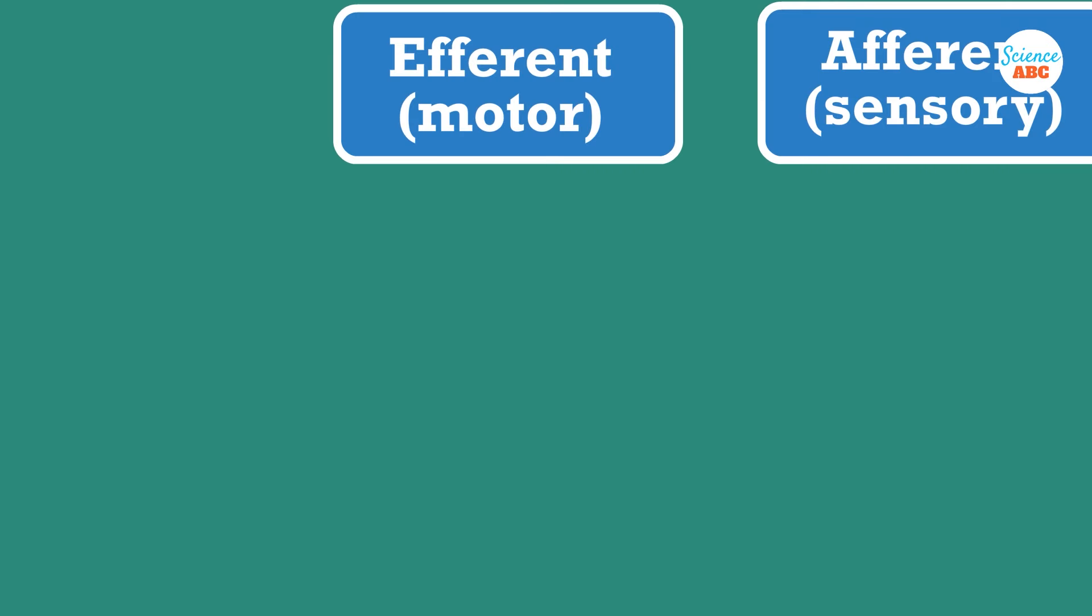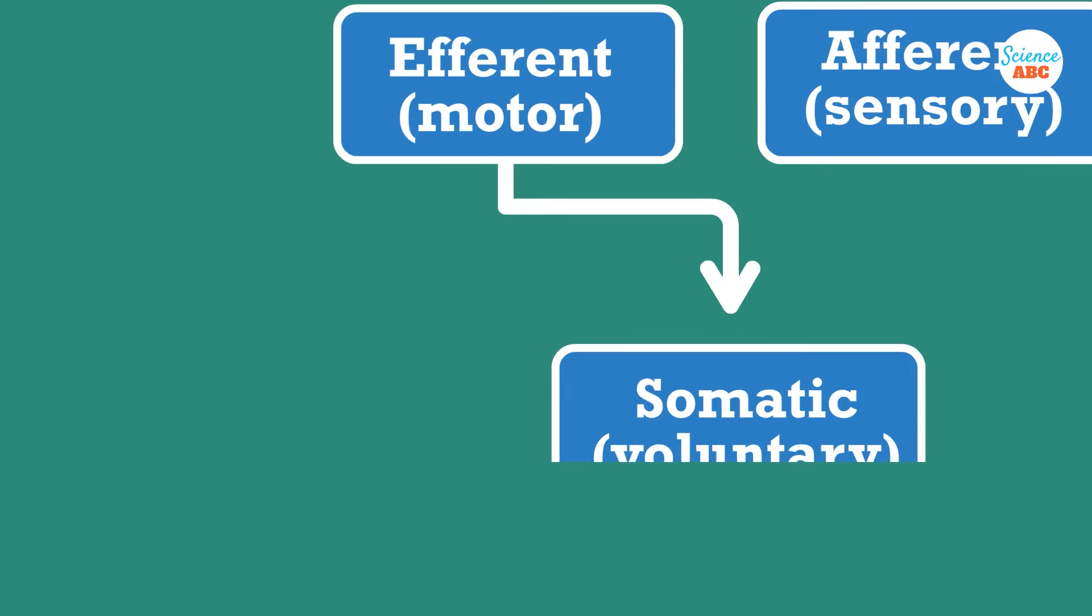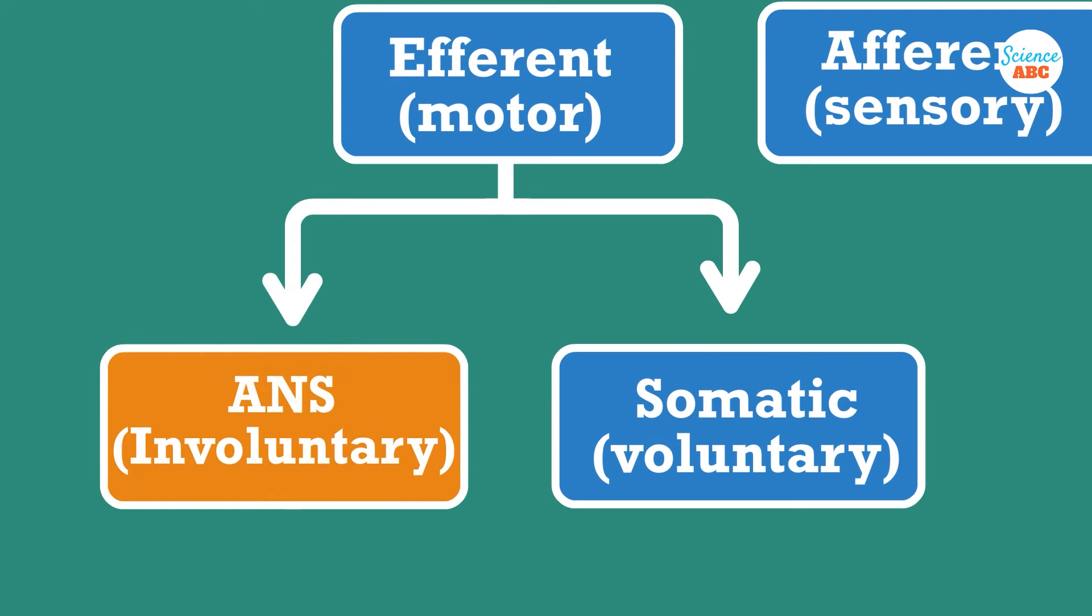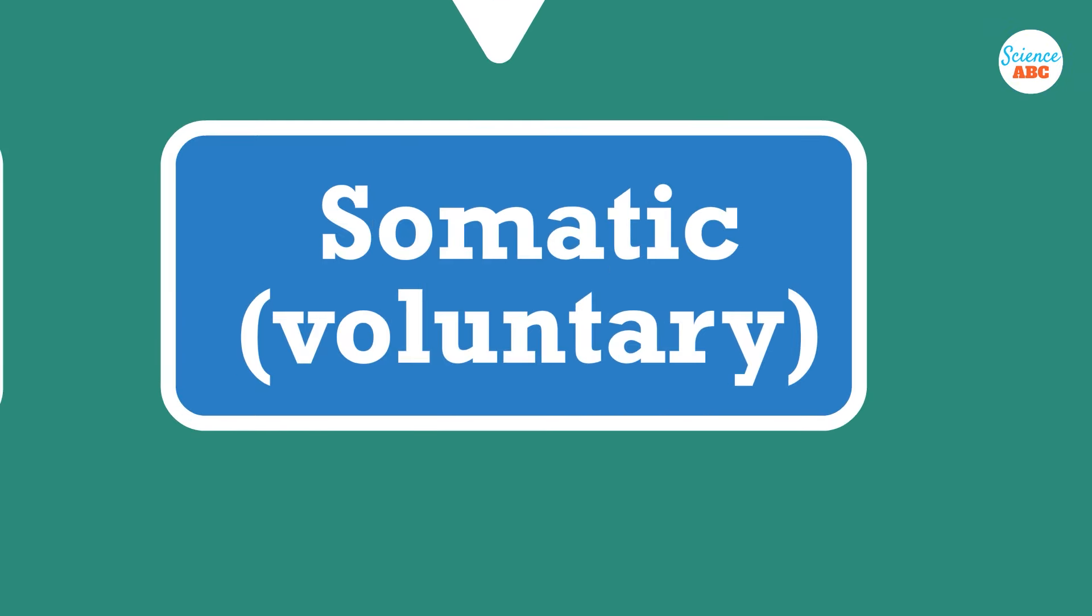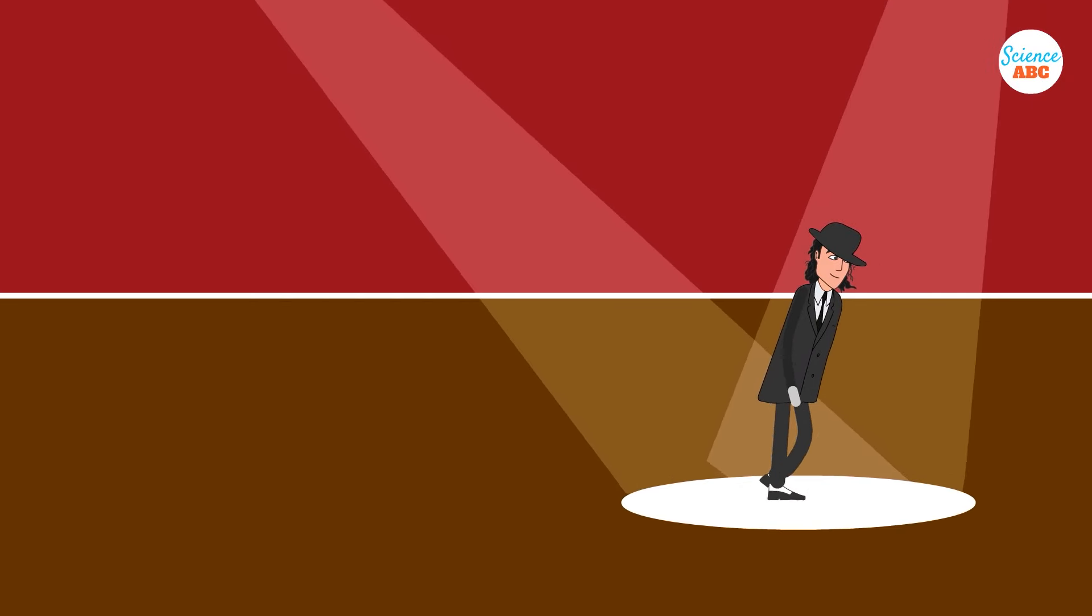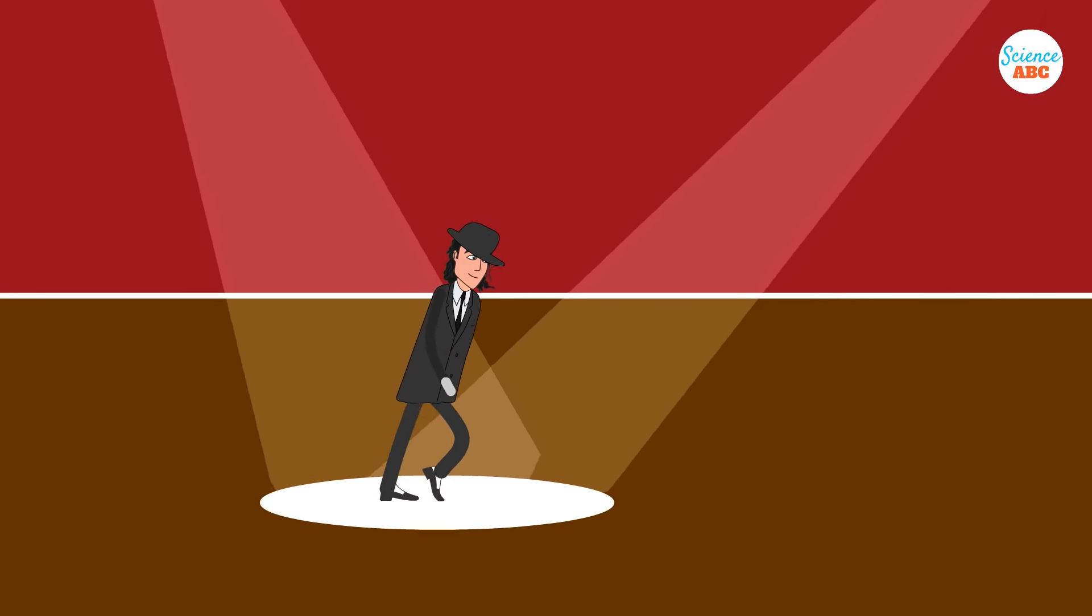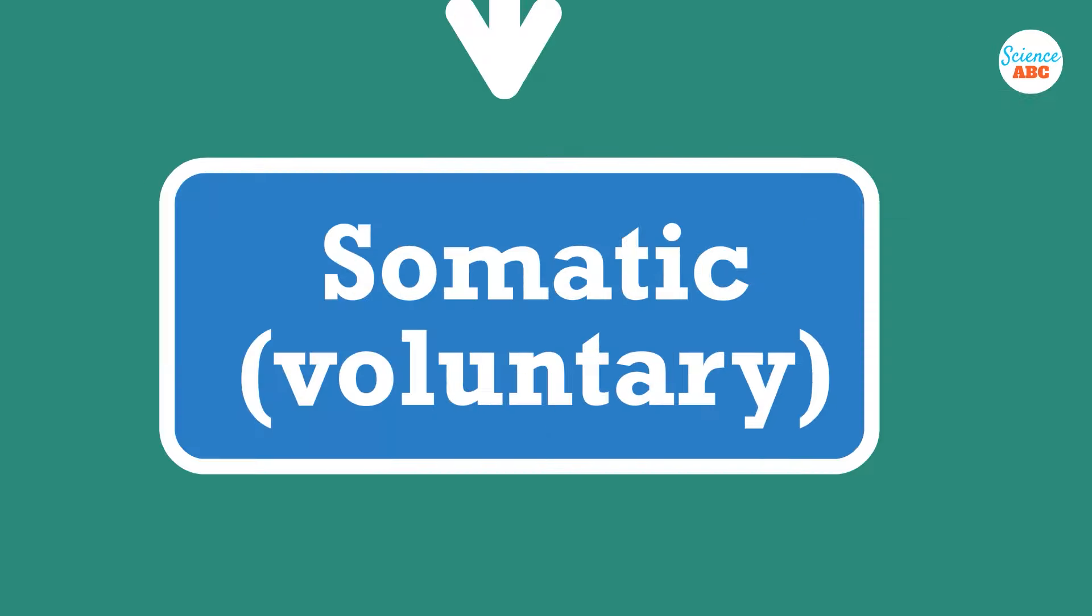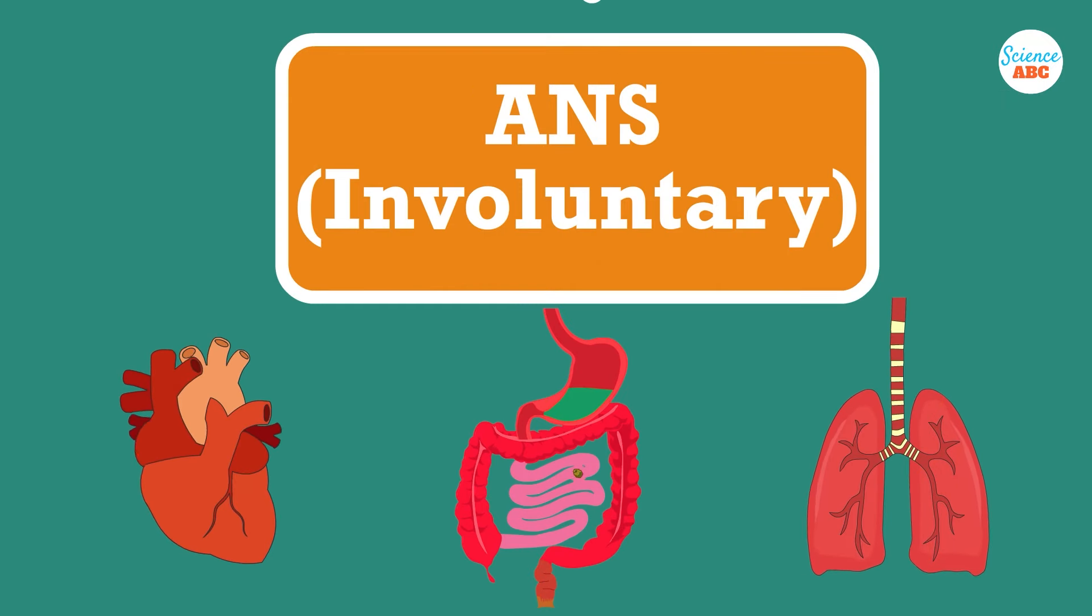The motor portion can be divided into the somatic nervous system, or SNS, and the autonomic nervous system, or ANS. The somatic nervous system controls voluntary movements and sensory perception, like sitting up and walking. The autonomic nervous system, on the other hand, regulates involuntary actions, such as your heartbeat, digestion, and breathing.